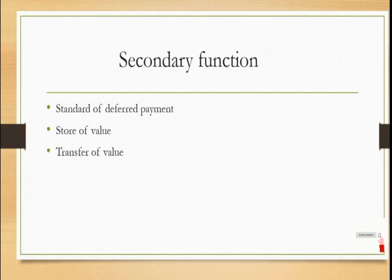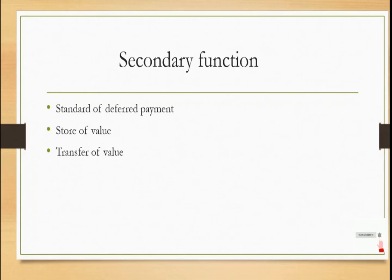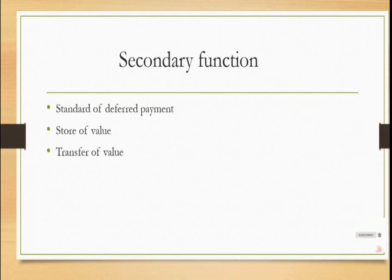Moving on to the secondary function. The first point under secondary function is standard of deferred payment. Deferred payment means future payment. For example, suppose you take a loan from a bank of 5 lakh rupees — you have to pay future installments of maybe 4,000 to 5,000 rupees depending on your tenure and payment schedule. Assuming 5,000 rupees paid monthly for the next 5 years, that is the expression of loan repayment. So future transactions are also expressed in terms of money.